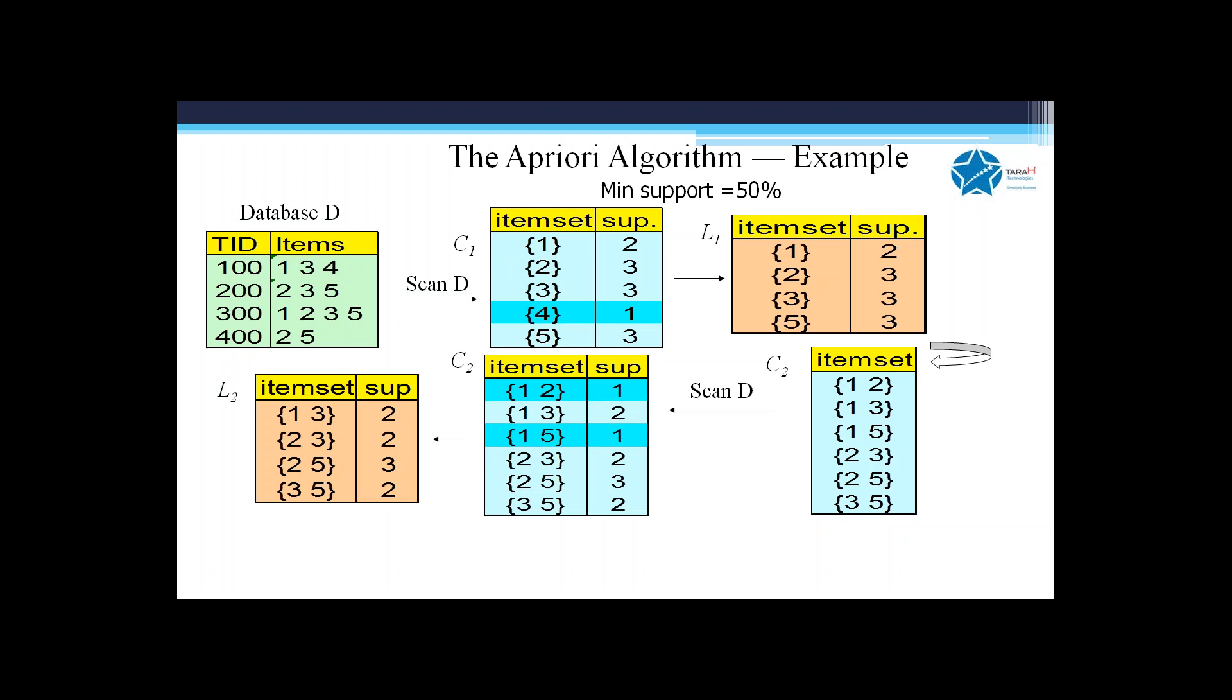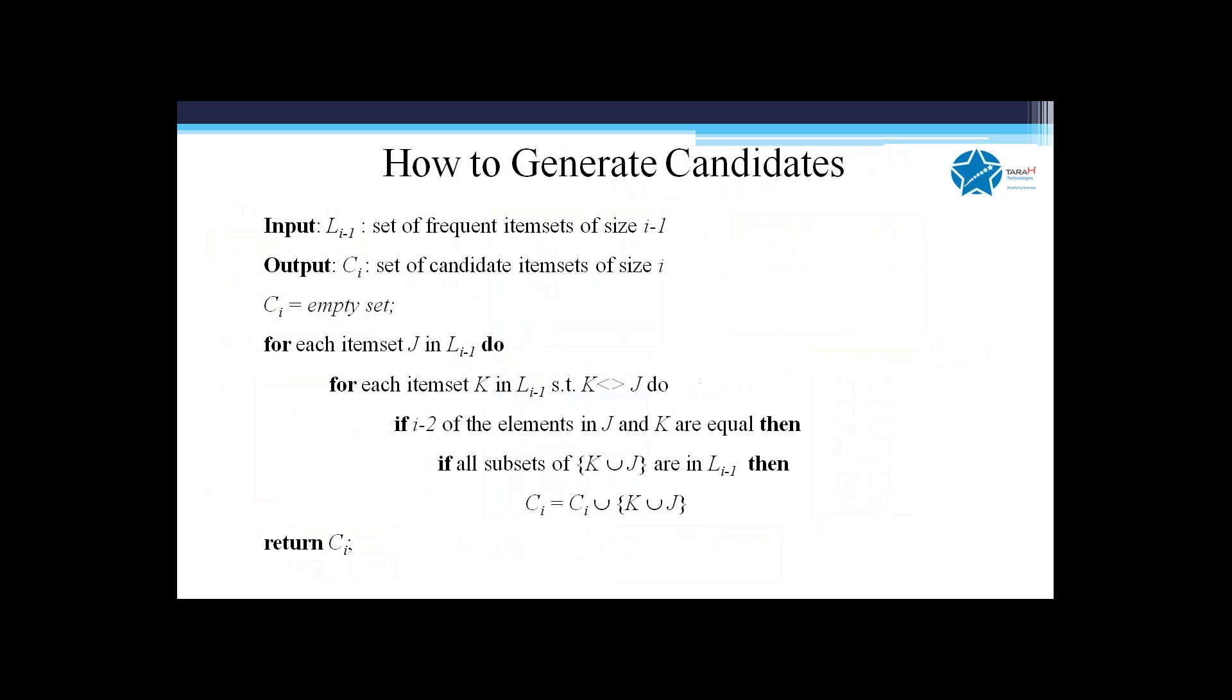When you expand to size three, you find there is only one which satisfies minimum support: two three five. So we get the final itemset which is two three five with the minimum support.